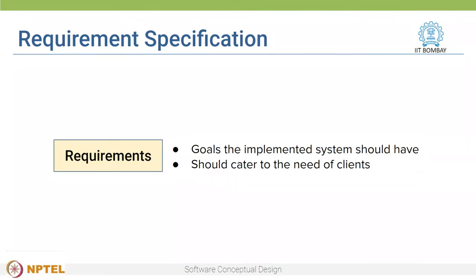All these are valid answers. We need to first understand what is the problem that we want to solve, and based on the analysis of existing and similar systems, we need to come up with an explicit set of goals that the implementation should solve. These goals are called the requirements of the software system, and this is usually the first step in the software development process.